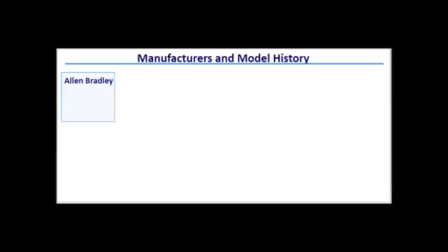Here are the major motor control center manufacturers and a history of their models. We'll look at each model on future slides and highlight the differences. Allen Bradley's current line is the Centerline 2500 and 2100. The Bulletin 798 was their first motor control center.